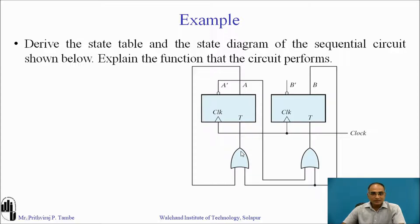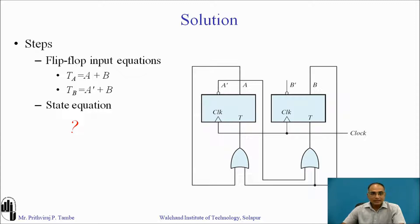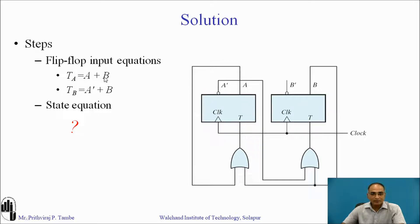The first step is the flip-flop input expressions. We will name the first flip-flop A and the second flip-flop on the right-hand side B. The expression for TA is A plus B, because the first OR gate inputs are A and B, where A represents the present state of flip-flop A and B represents the present state of flip-flop B. Similarly, the input to the B flip-flop, TB, is A-bar plus B.